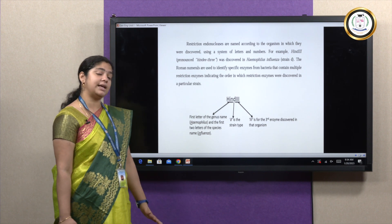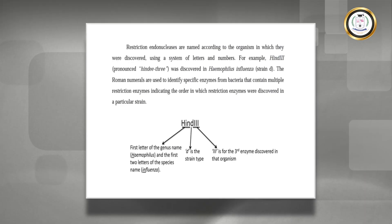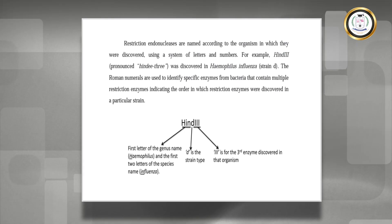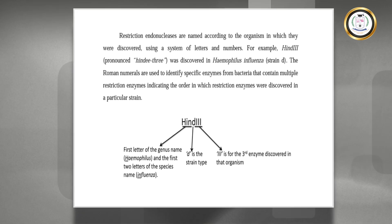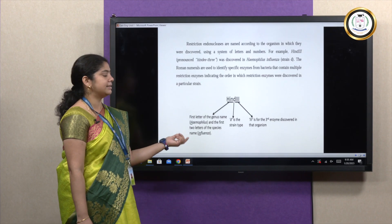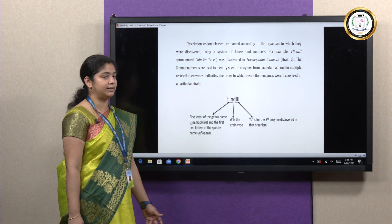Restriction enzyme is named based on the organism from which it is isolated. For example, HindIII is isolated from Haemophilus influenzae. The first letter codes for the genus, D is the strain type, and the III refers to the third enzyme discovered in this organism.